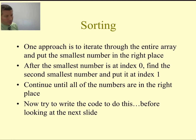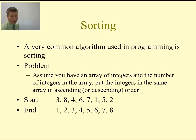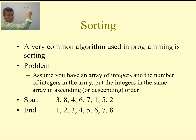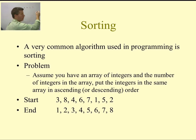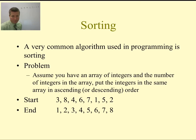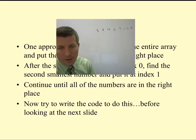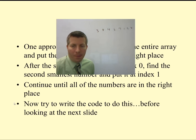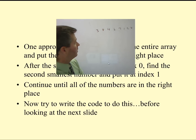Let me show you what that would look like on our previous example. Here are the numbers that we had: 3, 8, 4, 6, 7, 1, 5, 2. If we want to put these numbers in order, what we do first is try to find the smallest number. So we start off with the value of 3.